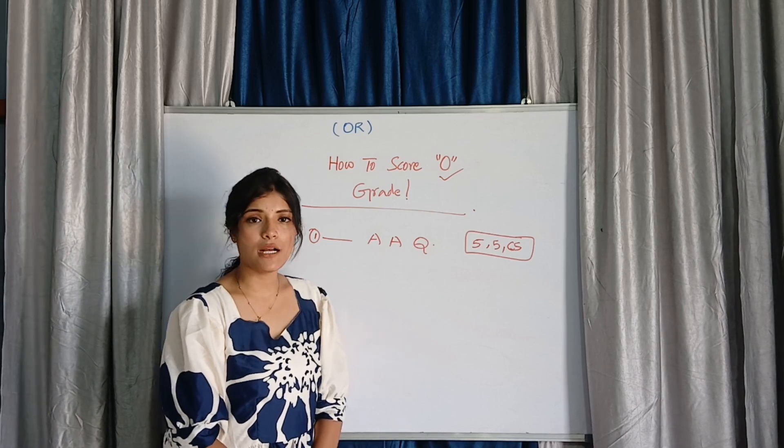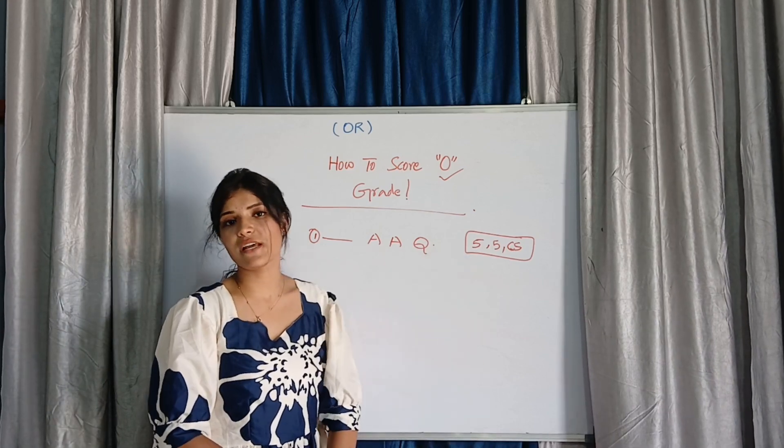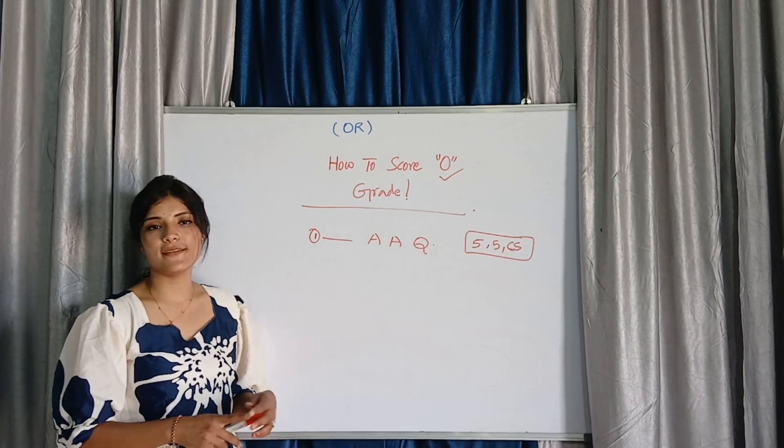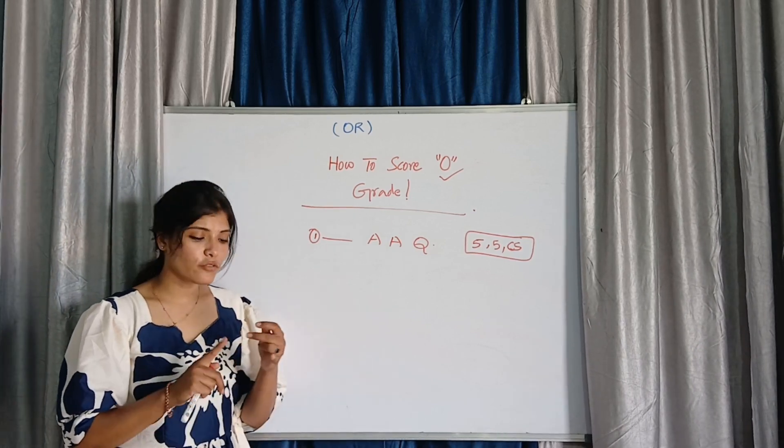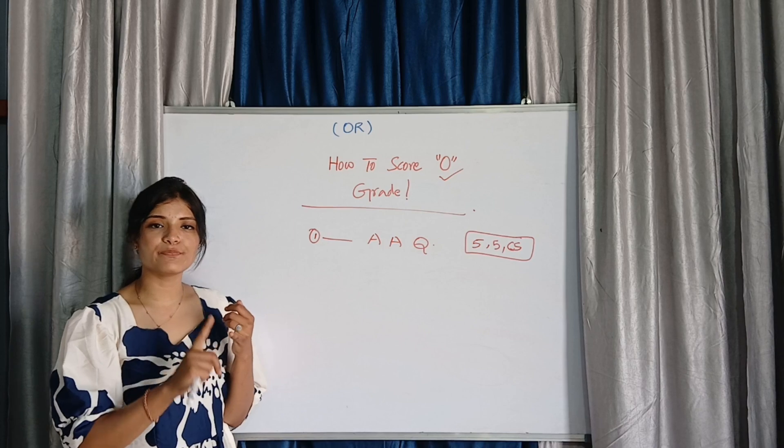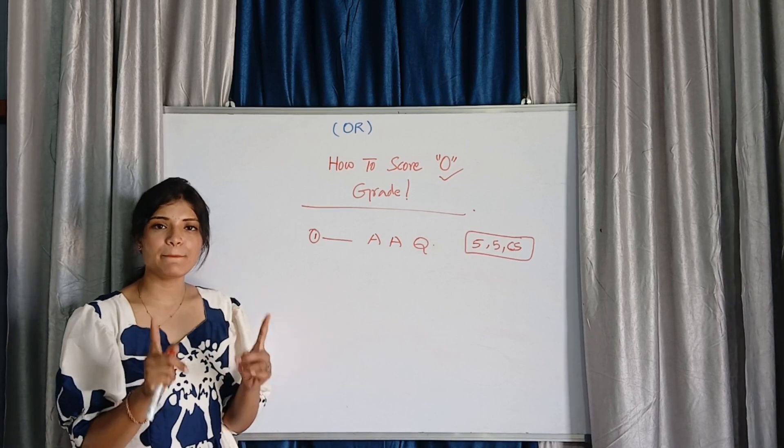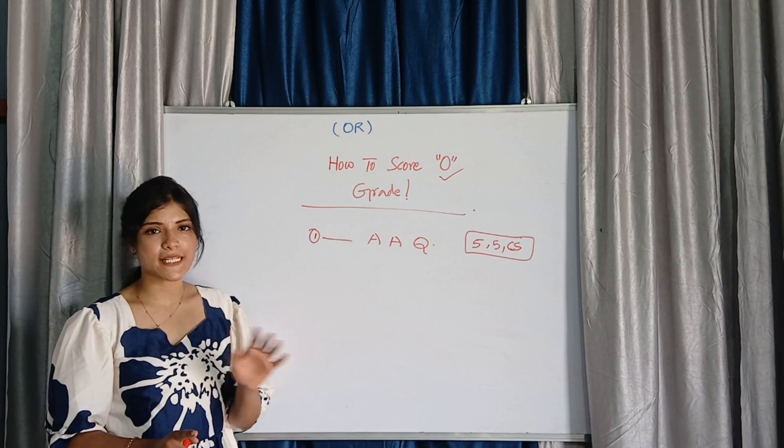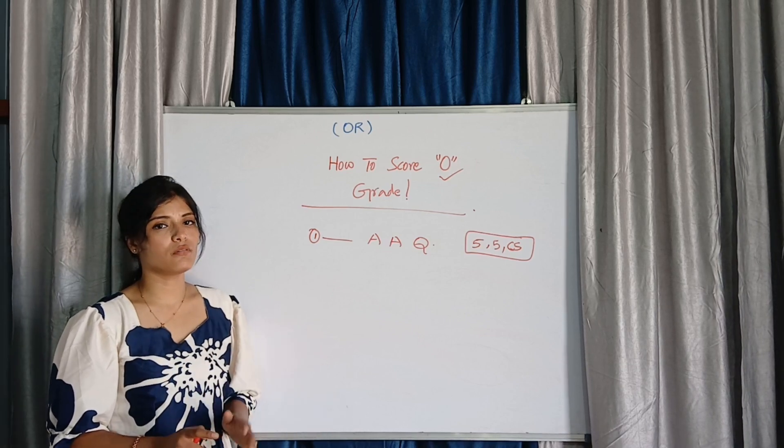If you are attempting only 3 questions in Part B, if you have no time, time management is not there, that time you will definitely not score O grade. Full paper first, and the important tip is attempting full paper. Without attempting full paper you can't expect O grade.